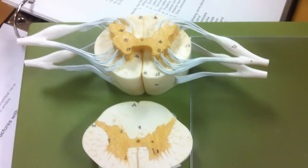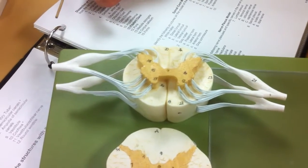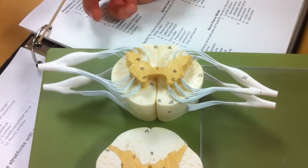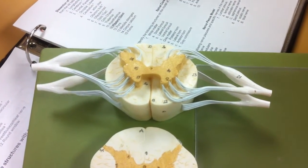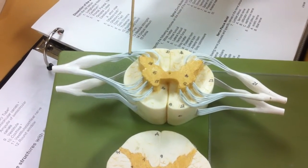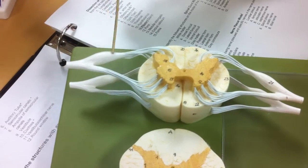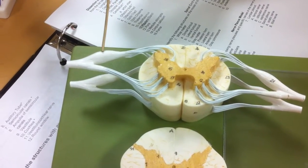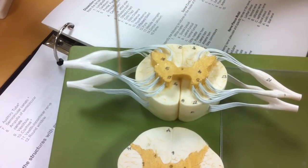And the dorsal root. Dorsal root would be, is it this one or that one? The first one, this one right? Yeah. The dorsal root. And the dorsal root ganglion, this swelling right here. And the ventral root right here in the front.